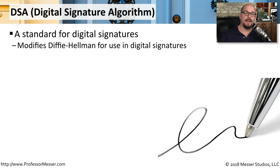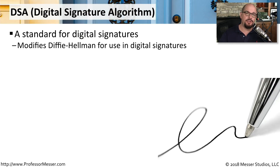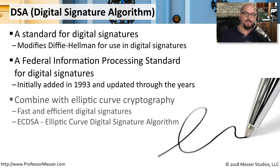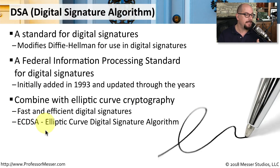If you need to provide some type of digital signature, you may want to use DSA, or Digital Signature Algorithm. This is a modification of the Diffie-Hellman Key Exchange for use with digital signatures, and it's also part of the Federal Information Processing Standard for Digital Signatures, or FIPS. To be able to use digital signatures on mobile devices with the minimum amount of resources, we could combine DSA with elliptic curve cryptography to create ECDSA, or Elliptic Curve Digital Signature Algorithm.